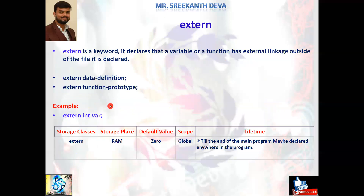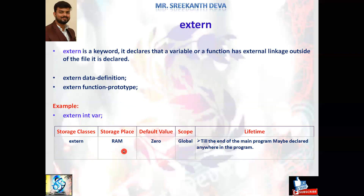extern is a keyword used as a storage class. It declares that a variable or function has external linkage outside of the file it is declared in. Once declared as extern, a variable becomes a global variable. Global variables are by default extern variables. If you want to share data type variables across multiple C programming files, you use the extern keyword. It is stored in RAM, default value is 0, scope is global, and it may be declared anywhere in the program until the end of main.